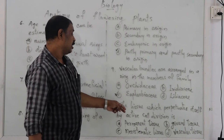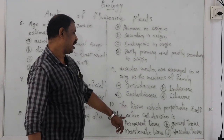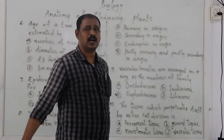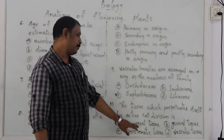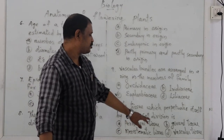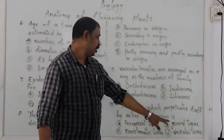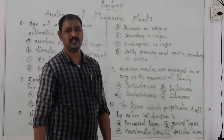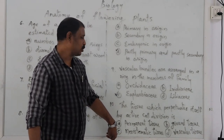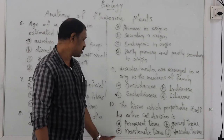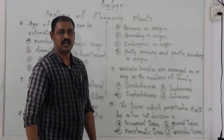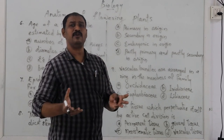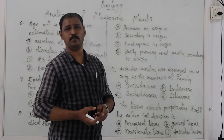Next question: the tissue which perpetuates itself by active cell division — what is it? Options: A — permanent tissue, B — ground tissue, C — meristematic tissue, D — vascular tissue. Meristematic tissue is the correct answer. Meristematic tissues can divide repeatedly and give rise to any type of tissue in plants. Option C is the correct answer.